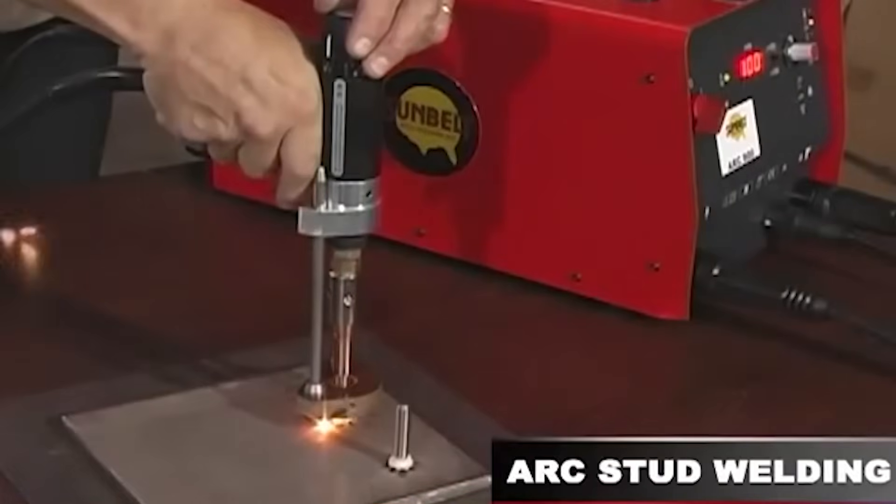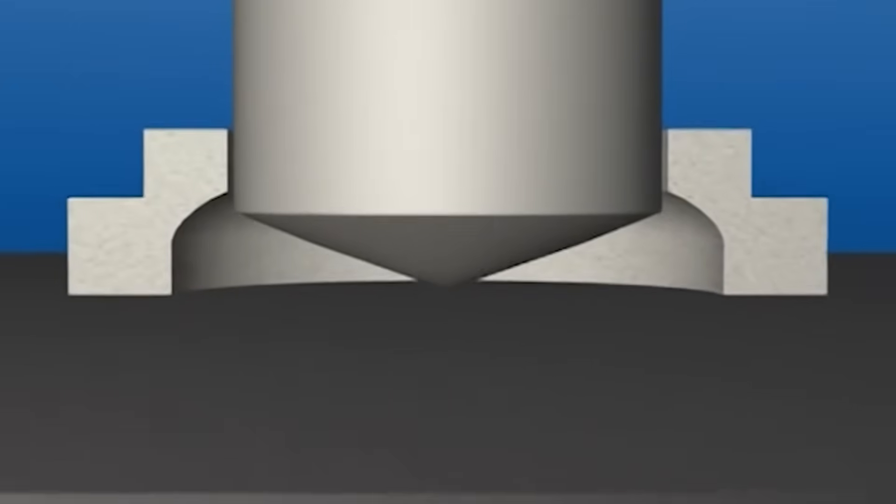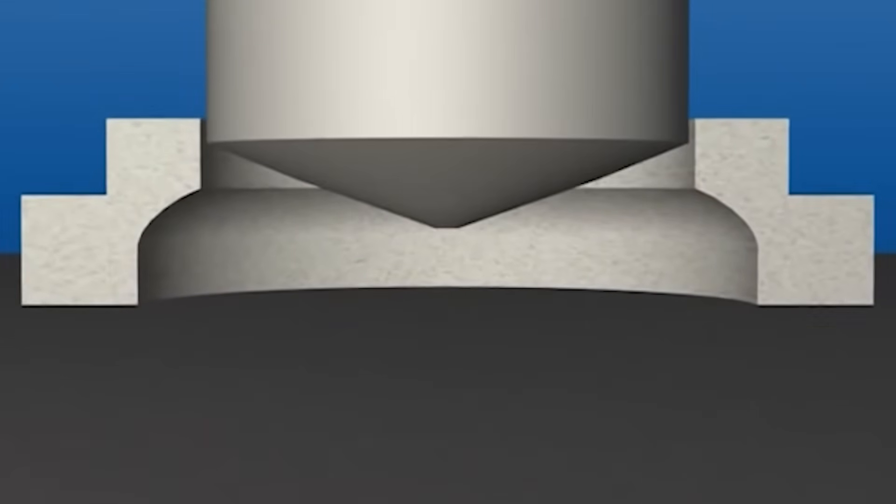Arc Stud Welding (SW), similar to flash welding, joins a nut or fastener—usually with a flange with nubs that melt to create the join—to another metal piece.